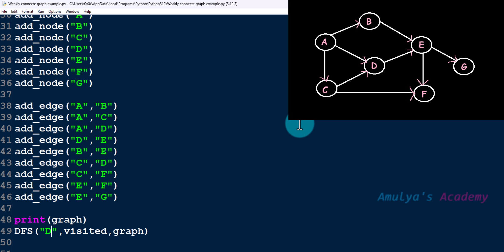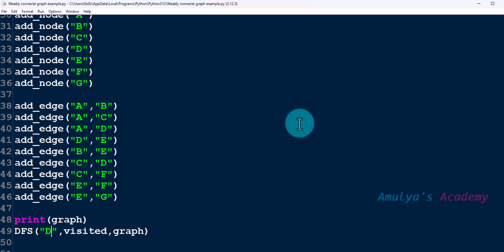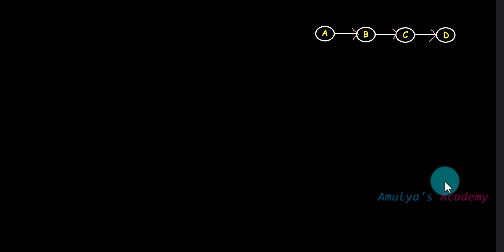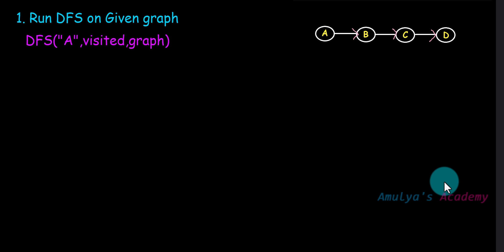So the concept we used in the undirected graph can't be used in the directed graph to find whether the graph is weakly or strongly connected. The solution is to use a specific algorithm. For example, taking this directed graph — which is actually a weakly connected graph — the first step is to run the DFS function on the given graph. You can take any node as the starting node, run DFS, and after that you will get a visited set containing all visited nodes.